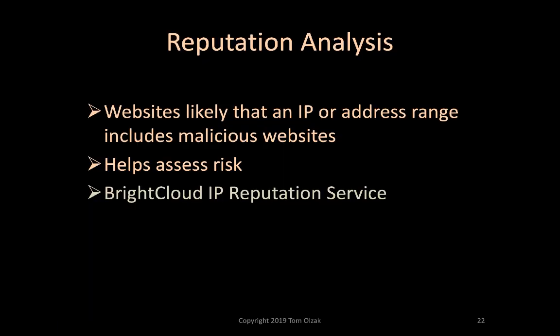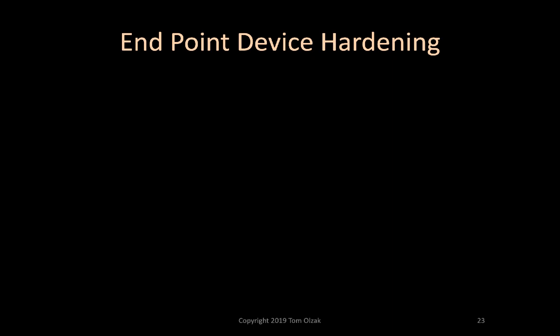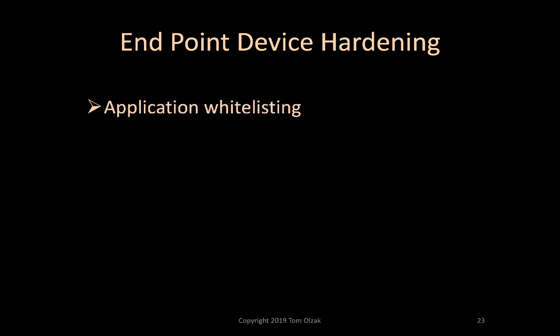Another related service is reputation analysis. Reputation analysis provides information about known malicious IP addresses and the likelihood that an IP address or IP address range is malicious. An example of this is the BrightCloud IP reputation service. The previous controls are needed because we have to assume MA will infect one or more endpoint devices. Mitigating risks associated with endpoint device infection is still the foundation of most of our security efforts today. Hardening begins with application whitelisting or simply blocking users from installing any software on their devices.